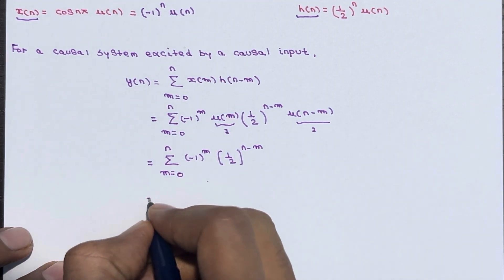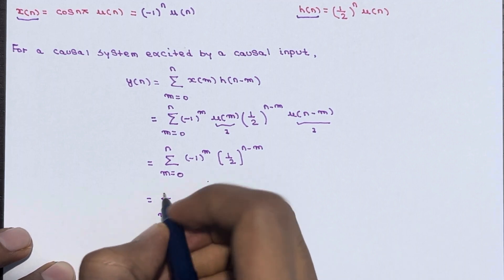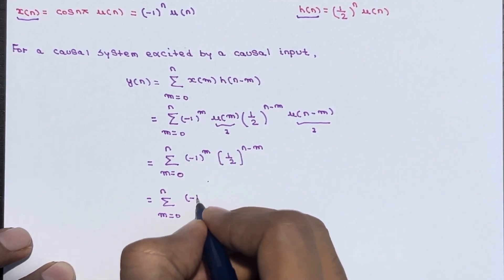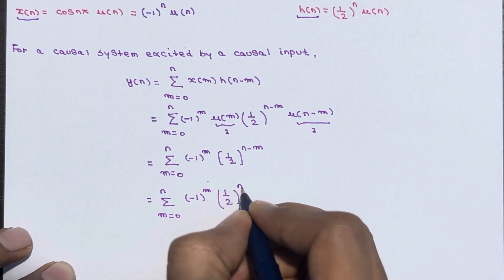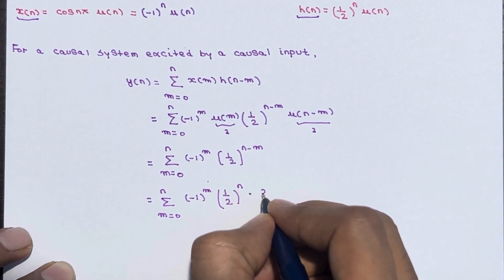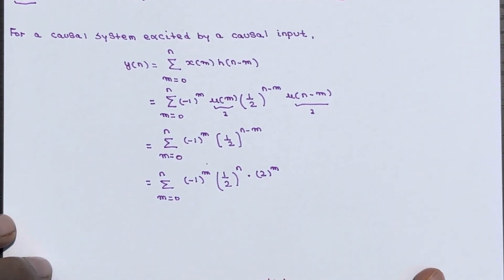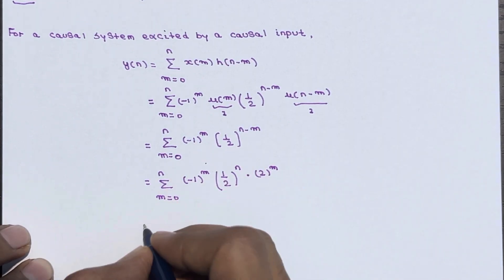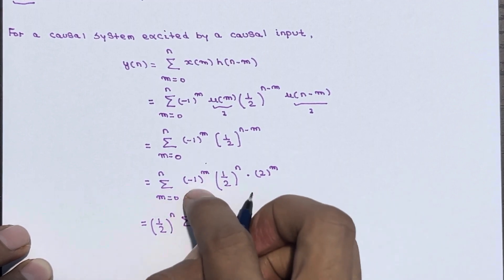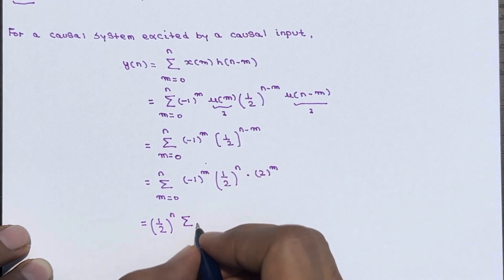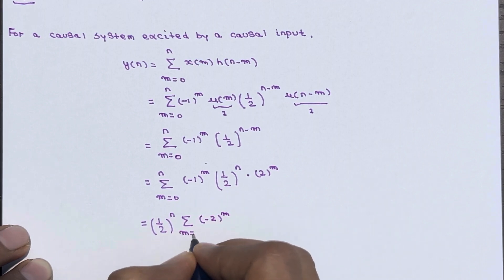So we can write it as the summation from m = 0 to n of (-1)^m · (1/2)^(n−m). This can be rewritten as the summation from m = 0 to n of (-1)^m · (1/2)^n · 2^m. Bringing (1/2)^n outside, it becomes (1/2)^n times the summation of (-1)^m · 2^m, which equals (-2)^m, with m from 0 to n.